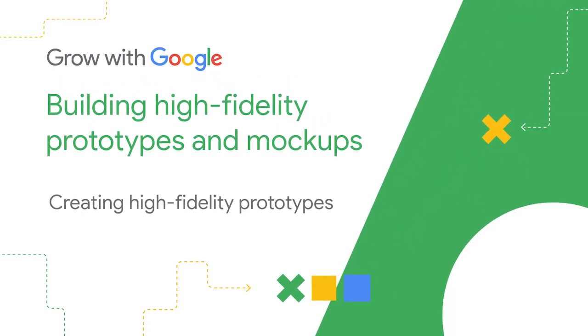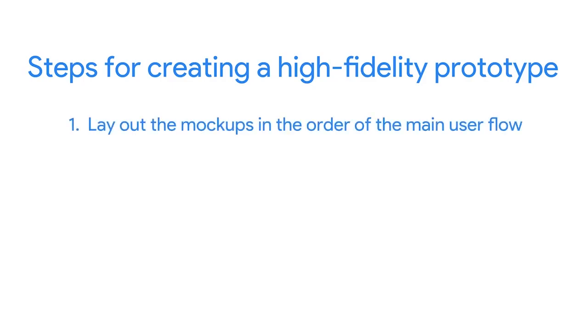Now it's time for you to create a design system in the tool you're using. With your mockups ready to go, it's time to create the high fidelity prototype of your dedicated mobile app. You're getting close to having a final product that can benefit the community you've chosen to serve. As a quick refresher, the steps to create a high fidelity prototype are: one, lay out the mockups in the order of the main user flow.